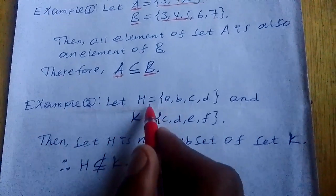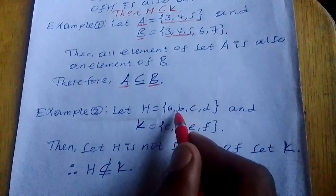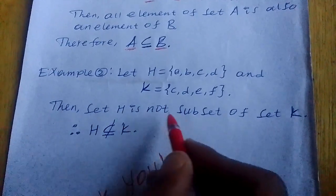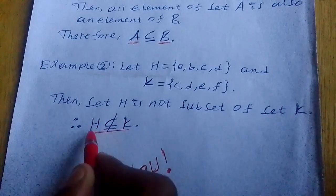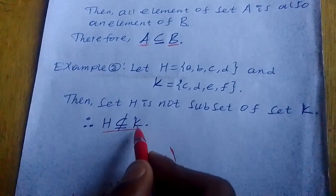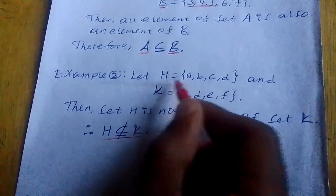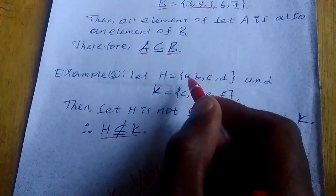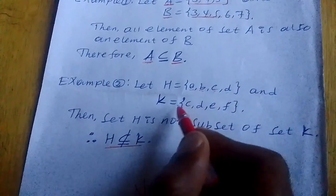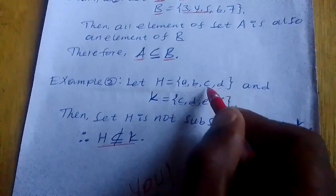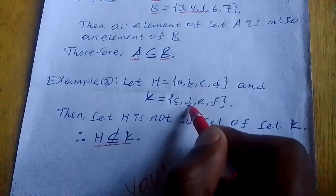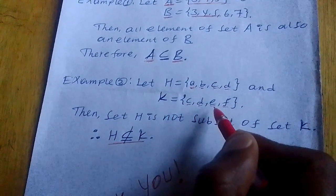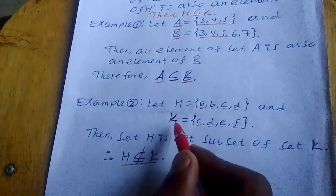Example two: Let set H equal to {A, B, C, D} and set K equal to {C, D, E, F}. Then set H is not a subset of set K. Symbolically, set H is not a subset of set K, because set H contains A, B, C, D and set K contains C, D, E, F — not all elements of H are in K.